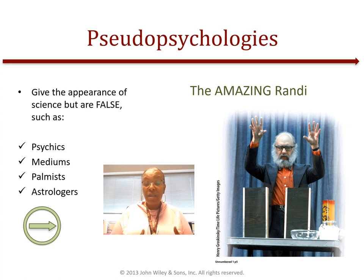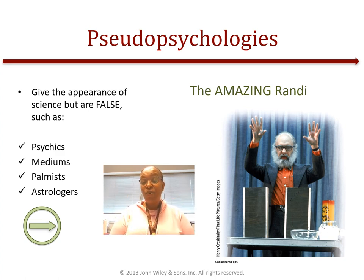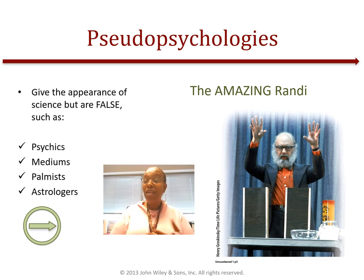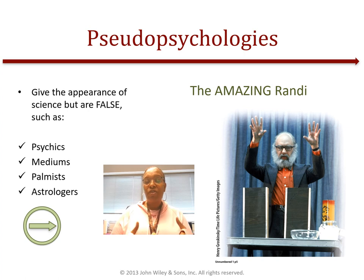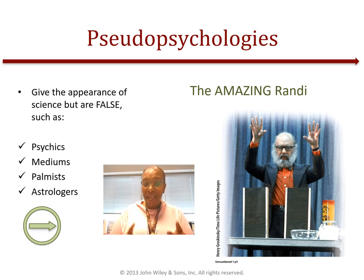Some of the different categories that fall within pseudo-psychology would be psychics, mediums — those who say they can do the paranormal or contact those who have passed — those who say they can read the palm of your hand, as well as astrologers. One point though: astrology has its own methods for reading the stars, however it is not a psychological component — that's the major difference.